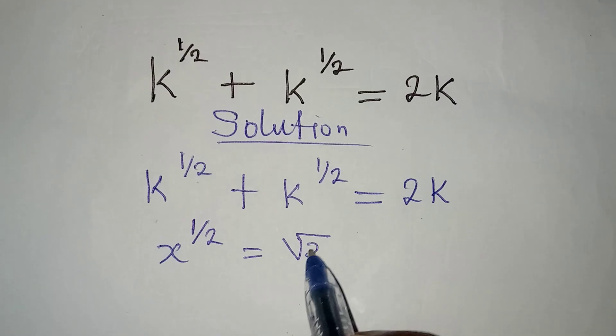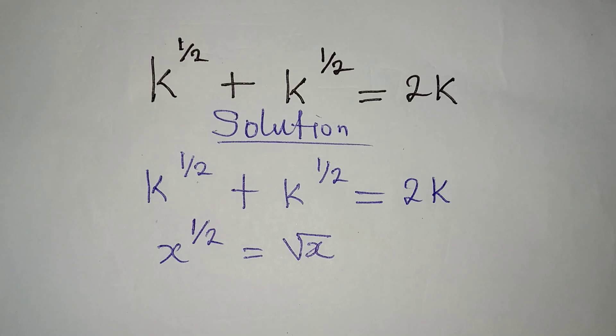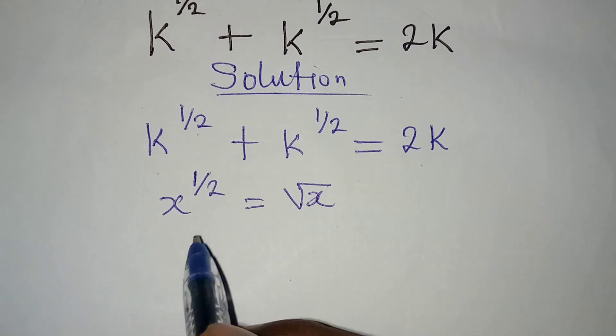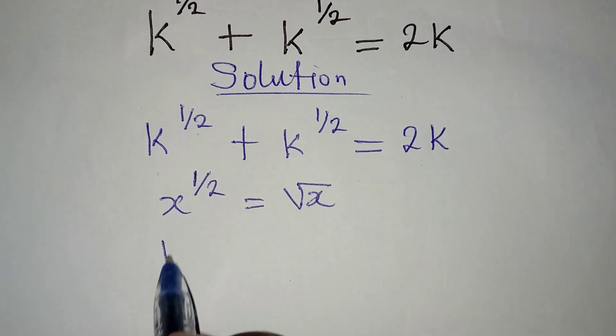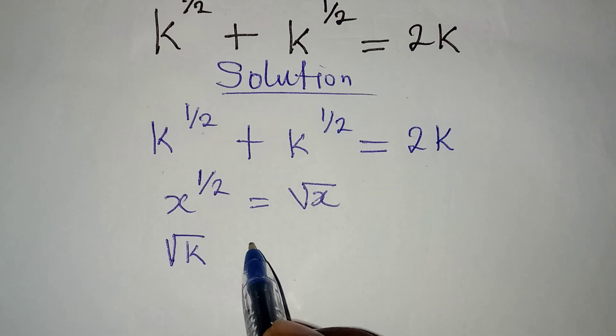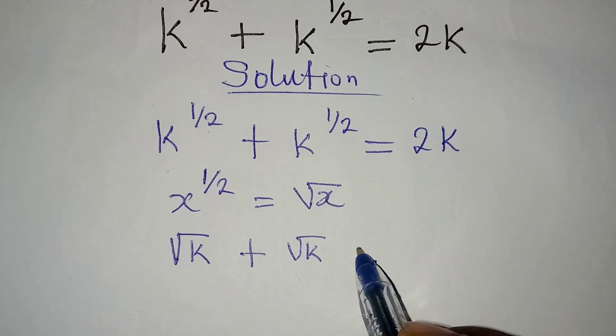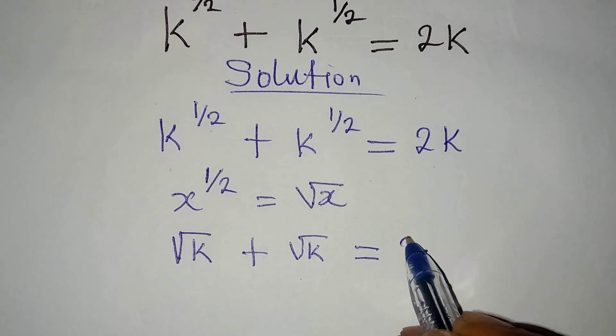So k to power of half will now be square root of k, then plus another square root of k, and it's equal to 2k.